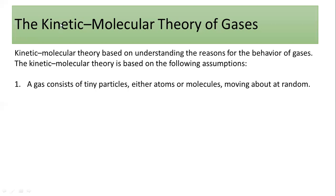The first assumption is that a gas consists of tiny particles, either atoms or molecules, which are moving about at random. There are two points: they are tiny particles and they are moving in a random way. In the case of helium gas, the particles are tiny and they are moving apart, so helium is going to act near to the ideal gas.